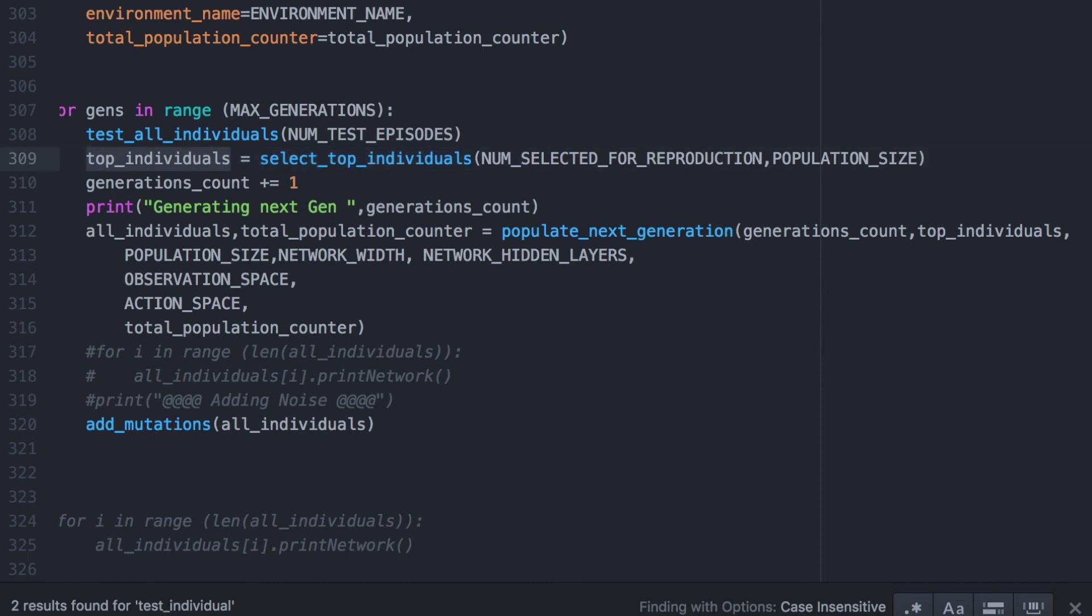We will then add random mutations to all new individuals. There are different strategies to introduce mutations. This will be based on two values: Mutation prob, which determines the probability that a weight of the network will be changed, and noise sigma, which determines the Gaussian magnitude of the feature weight change. Rinse and repeat.